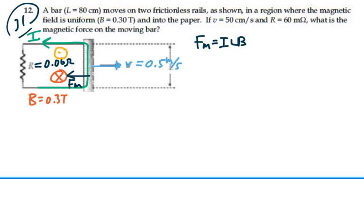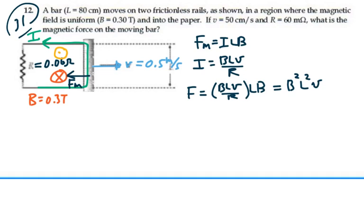The current will be equal to the induced voltage, which is B L v divided by the resistance. So our force is going to be the current B L v divided by resistance times L times B. And that's going to be B squared L squared velocity over the resistance.